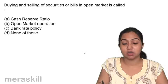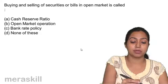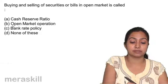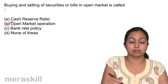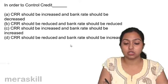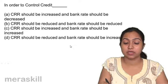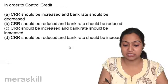Buying and selling of securities or bills in the open market is called open market operations. In order to control credit, CRR should be increased and bank rate should also be increased.